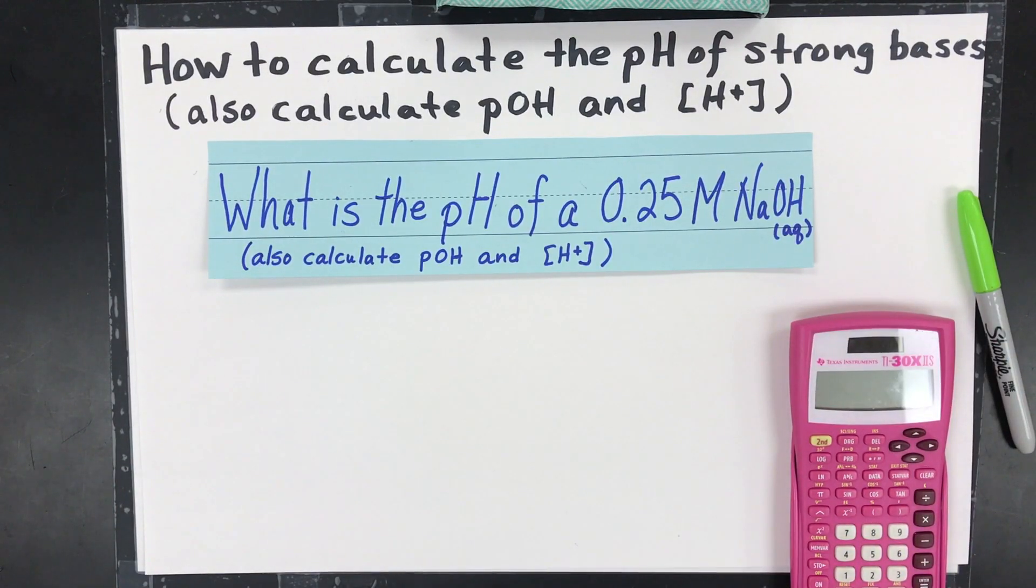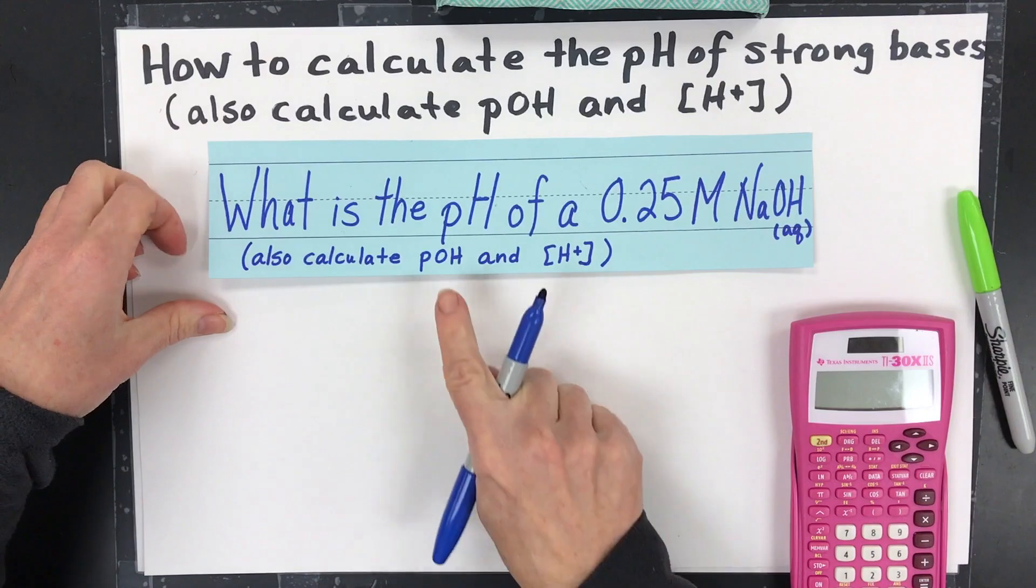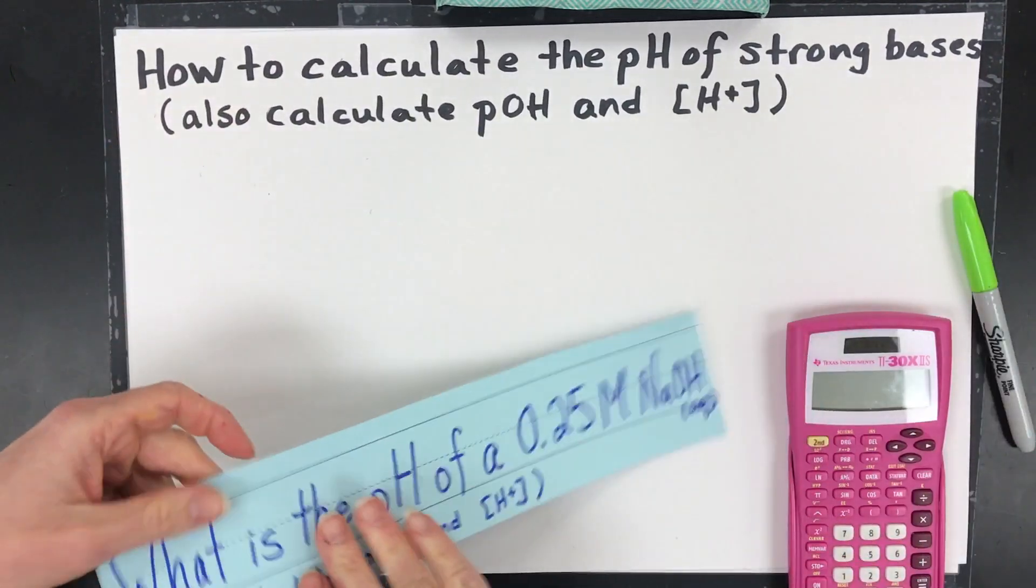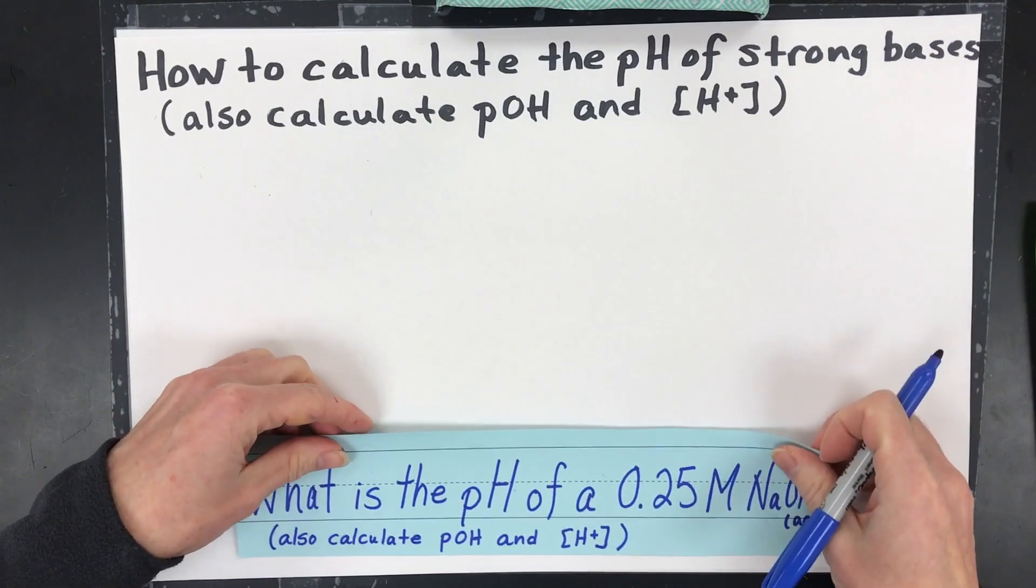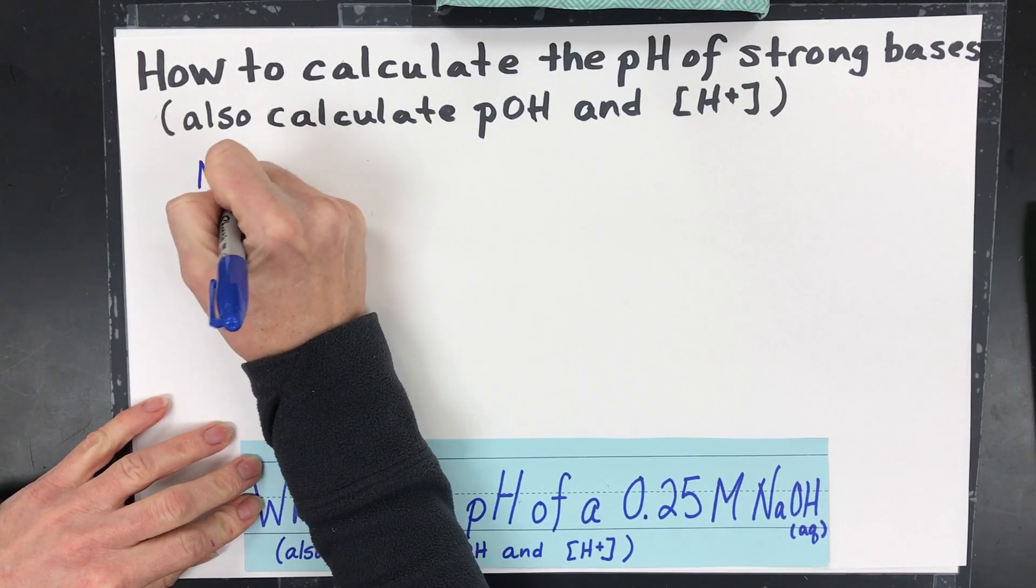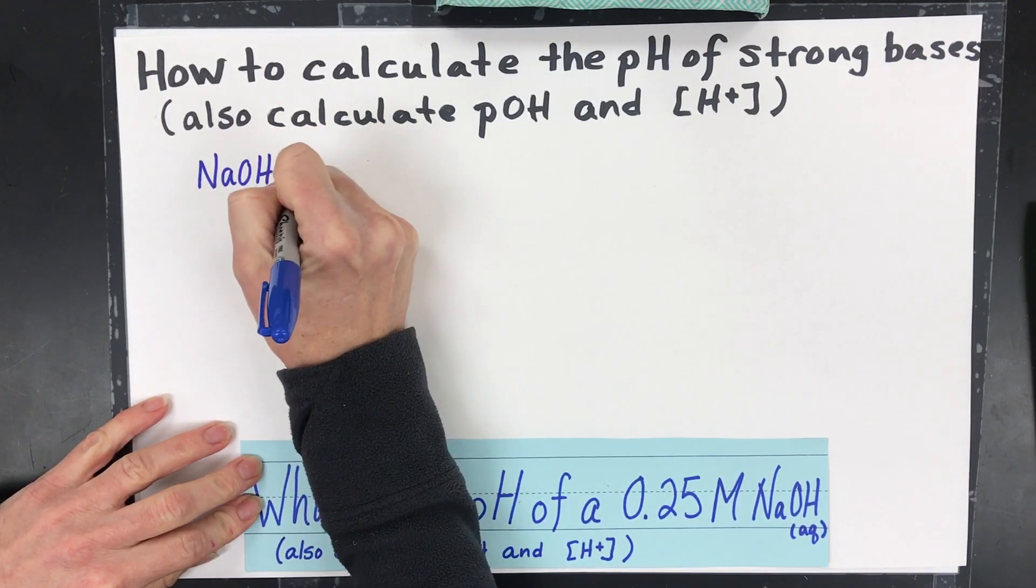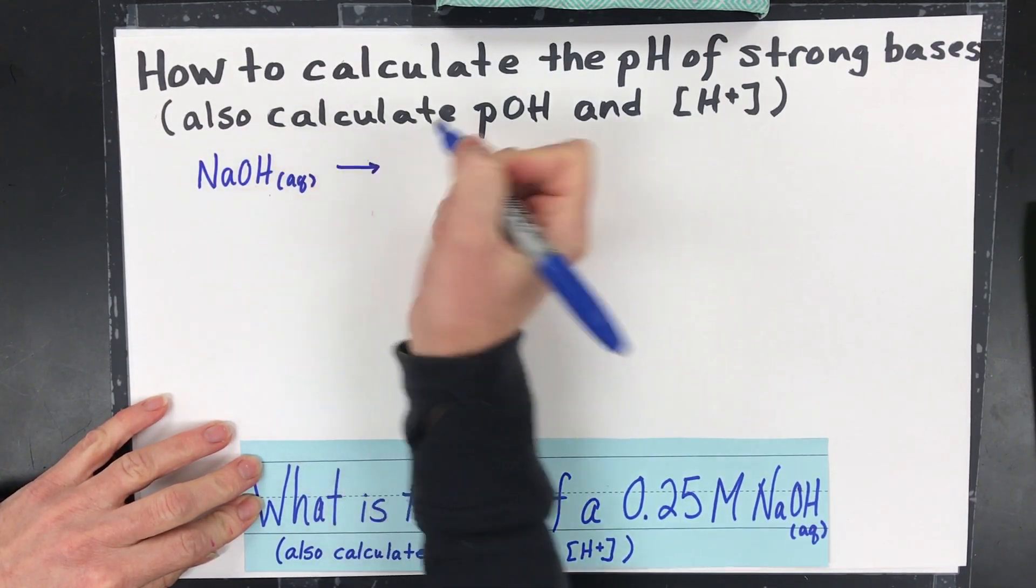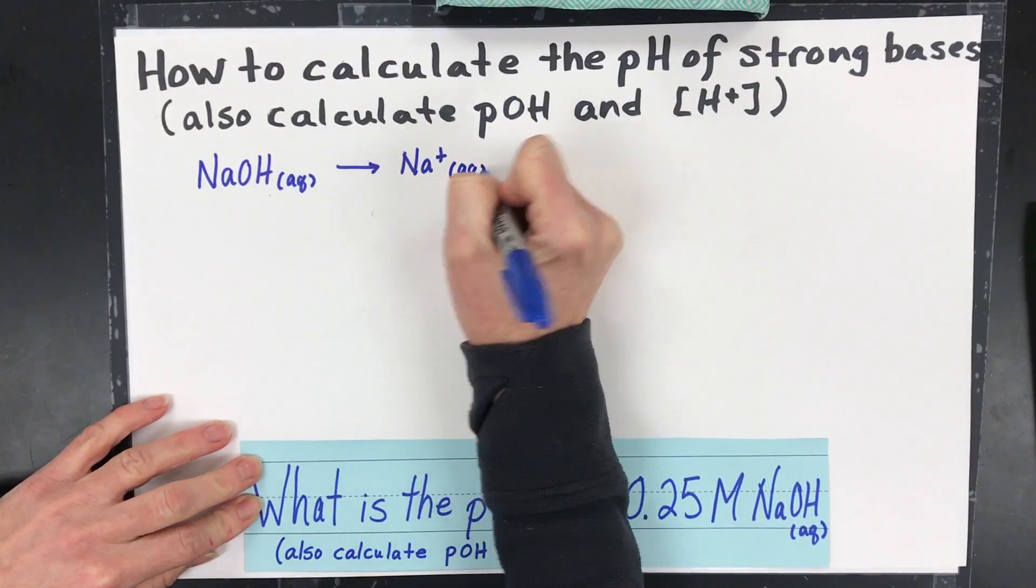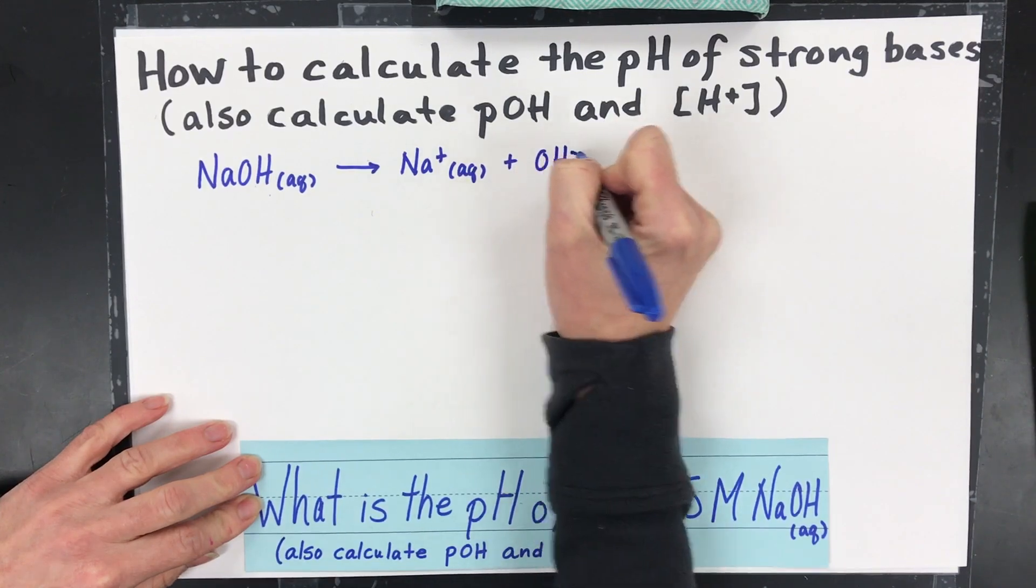So we've got what's the pH of a 0.25 molar NaOH? I'm going to calculate the pOH and the hydrogen ion also. So the first thing you want to know is that sodium hydroxide, if you put it into water, it'll dissociate completely into all sodium ions that are aqueous and hydroxide ions. So there will be no sodium hydroxide left.